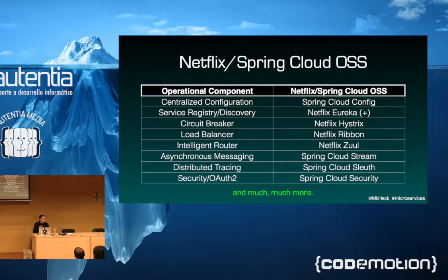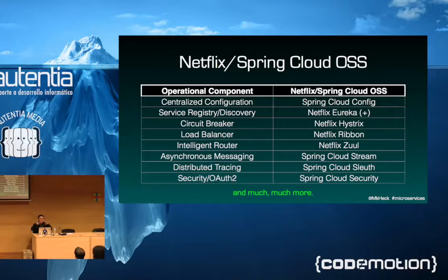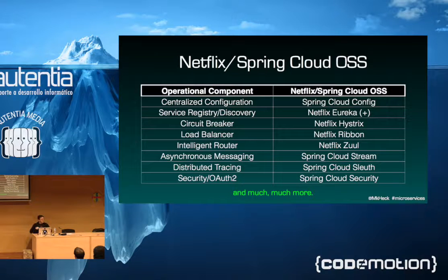When you externalize configuration, you wind up with key-value pairs — text — and what do we use every day to store, version control, and audit text? We use things like Git. Spring Cloud Config sits on top of a Git repository and serves those properties up to any microservices that contact it. Netflix's application netflix.com is fed by a cluster of about 500 microservices, each running as multiple instances. In a microservices world you have multiple instances of multiple microservices that need to get their properties and possibly have them refreshed while live — that's what Spring Cloud Config Server is for.